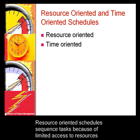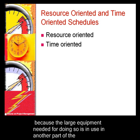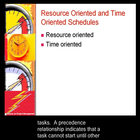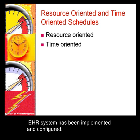Resource-oriented schedules sequence tasks because of limited access to resources needed to complete a task. For example, construction of a wing of the hospital may be delayed because the large equipment needed is in use in another part of the construction. Time-oriented schedules focus only on precedent relationships among tasks. A precedent relationship indicates that a task cannot start until other tasks are done. For example, training of staff on how to use an EHR, or electronic health record, cannot start until the EHR system has been implemented and configured.